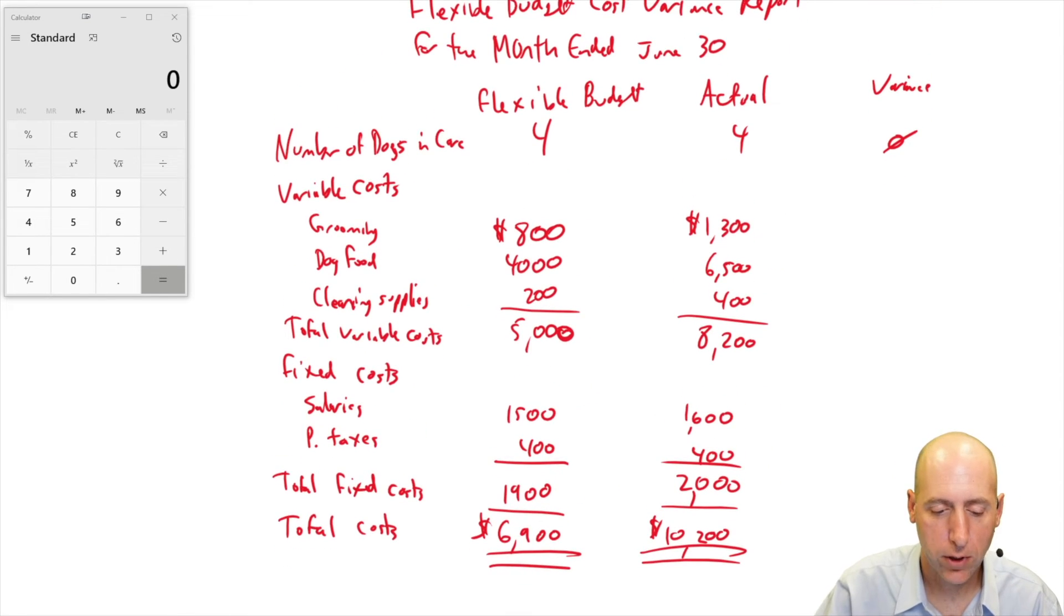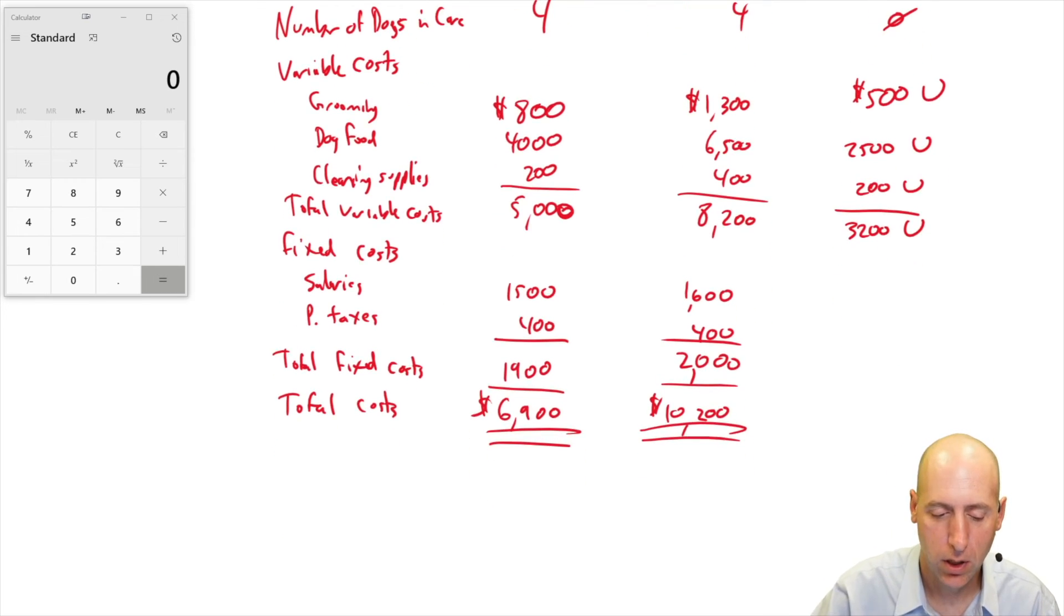Let's do our variances. So for grooming, we actually spent $1,300. We ought to have only spent $800. This is $500, and it is unfavorable. For dog food, we actually spent $6,500. We ought to have spent $4,000. This is $2,500 unfavorable. We overspent on cleaning supplies, $400. We should have spent $200, given we only had four dogs in our care. The total here is $3,200 unfavorable. Salaries, we spent $100 more than we expected. That's unfavorable. Property taxes were right on expectation. So overall, the overall variance is $3,300, and it's unfavorable.